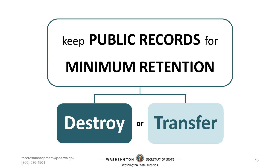The main thing to understand about retention is that your responsibility is to keep your agency's records for the minimum amount of time listed in the retention schedule, and then either destroy them or transfer them to the state archives for preservation or appraisal. Please keep in mind that there are only two agencies authorized to be legal custodians of your records: your agency or the Washington State Archives. You can't transfer records to an individual, a library, a historical society, or allow staff to keep records as personal possessions.